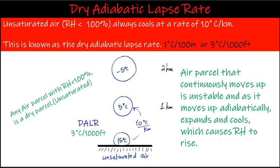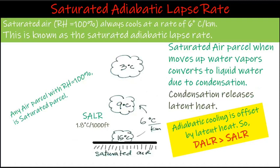Saturated adiabatic lapse rate, or SALR: any air parcel with relative humidity of 100% is saturated air. When a saturated air parcel moves up, water vapor converts to liquid water due to condensation. Condensation releases latent heat, which offsets and reduces the cooling due to expansion. So saturated air cools a little more slowly — we use an average rate of 6 degrees Celsius per kilometer, which is the moist adiabatic lapse rate. Remember: dry adiabatic lapse rate is greater than saturated adiabatic lapse rate.